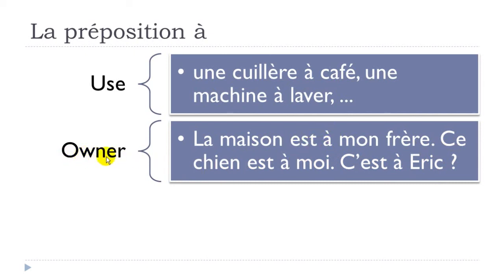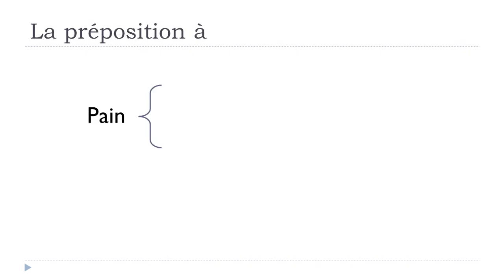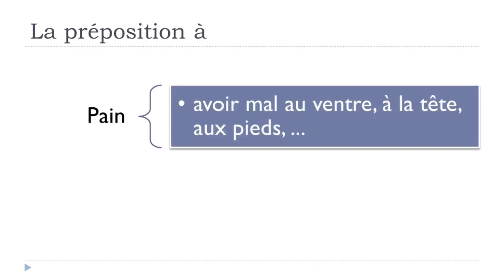For telling time or setting appointments, use À. For example: 'rendez-vous à 20 heures' — let's meet at 8 PM. 'À 8 heures du matin' — at 8 in the morning. Also, to express body pain in French, use 'avoir mal à': 'avoir mal au ventre' (stomach ache — au = À + LE, ventre is masculine).